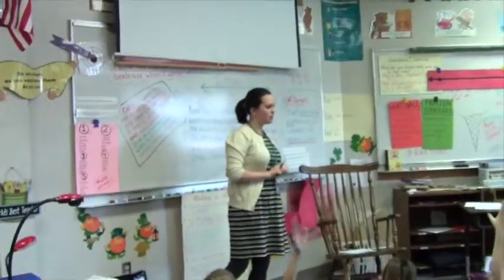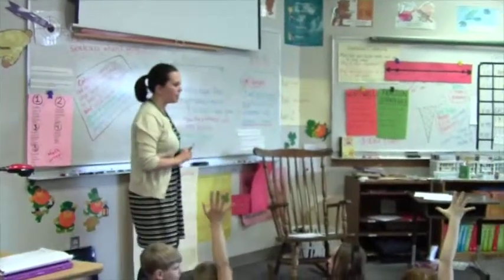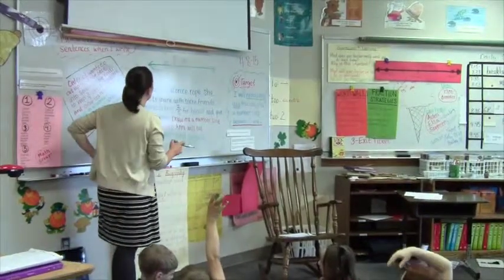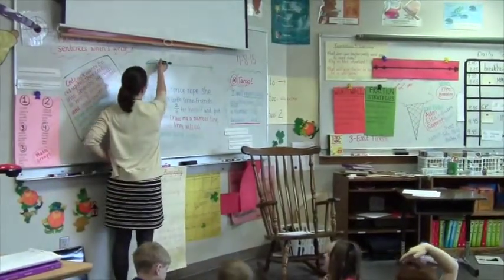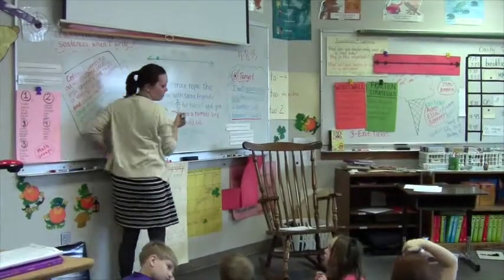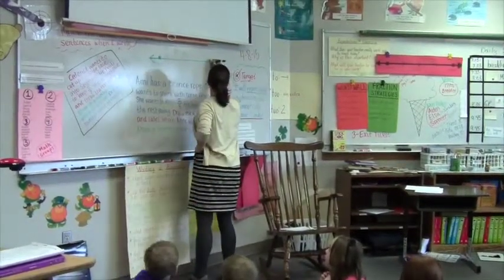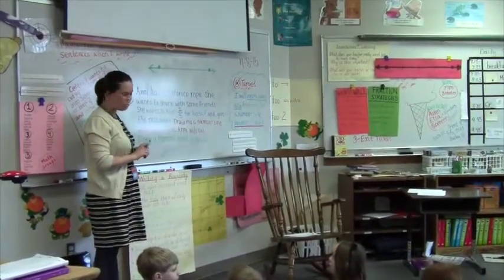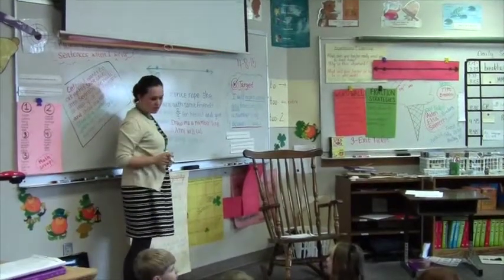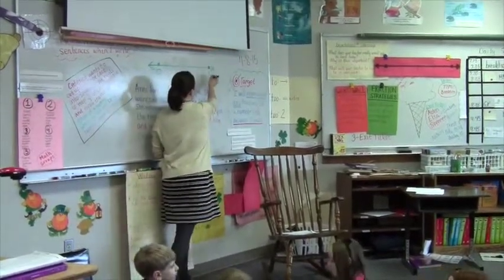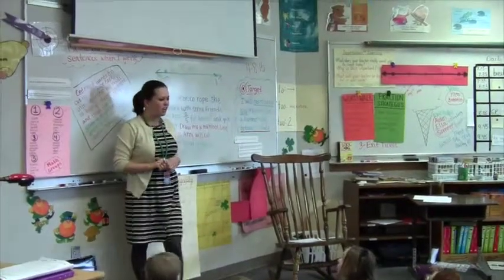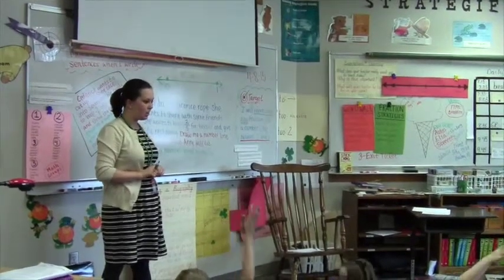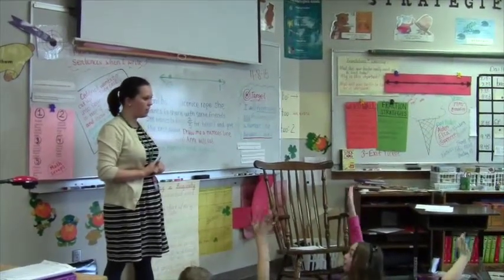How many yards would we say there are between home plate and first base? Thirty. Okay — this is home plate and this is first base. What do you think we're going to use as our end points? What might we use as our end points? How come you didn't use 0 and 30?